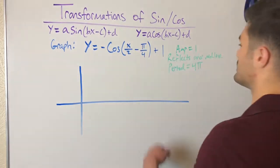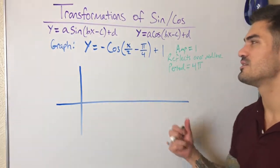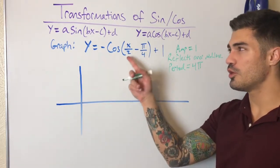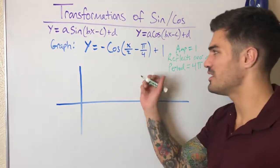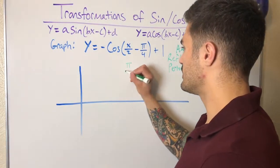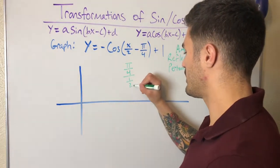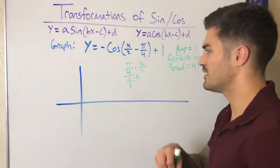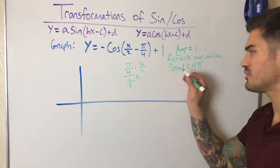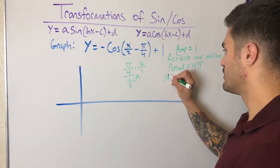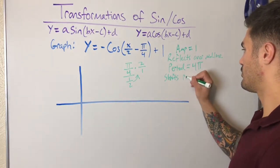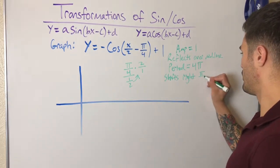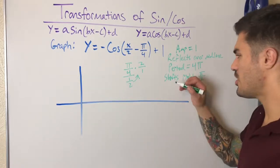We also have a phase shift. It's negative so we're shifting to the right. The shift is pi over four divided by one half — flip and multiply — giving pi over two. So the phase shift is right pi over two. And there's a vertical shift up by one.